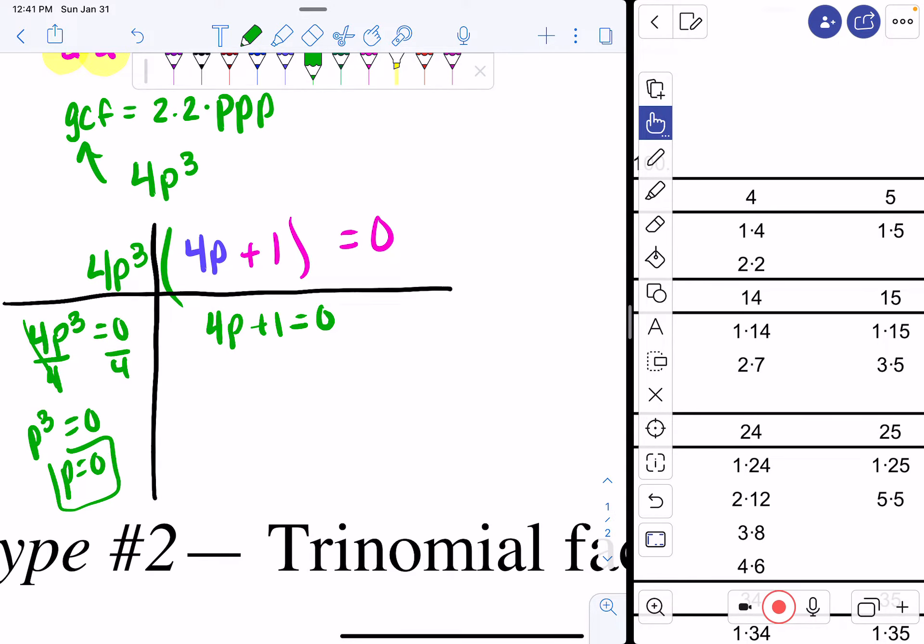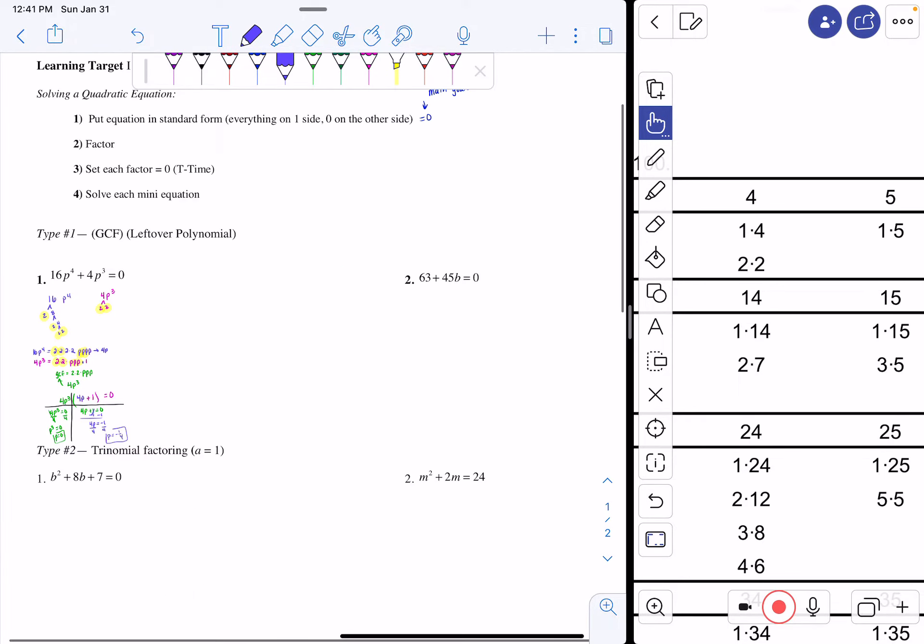Here, this becomes a two-step equation. How do I get rid of my plus 1? I subtract 1. I get 4p equals negative 1, divide by 4, divide by 4, and I get p equals negative 1/4. So this has two solutions: p equals 0, and p equals negative 1/4.